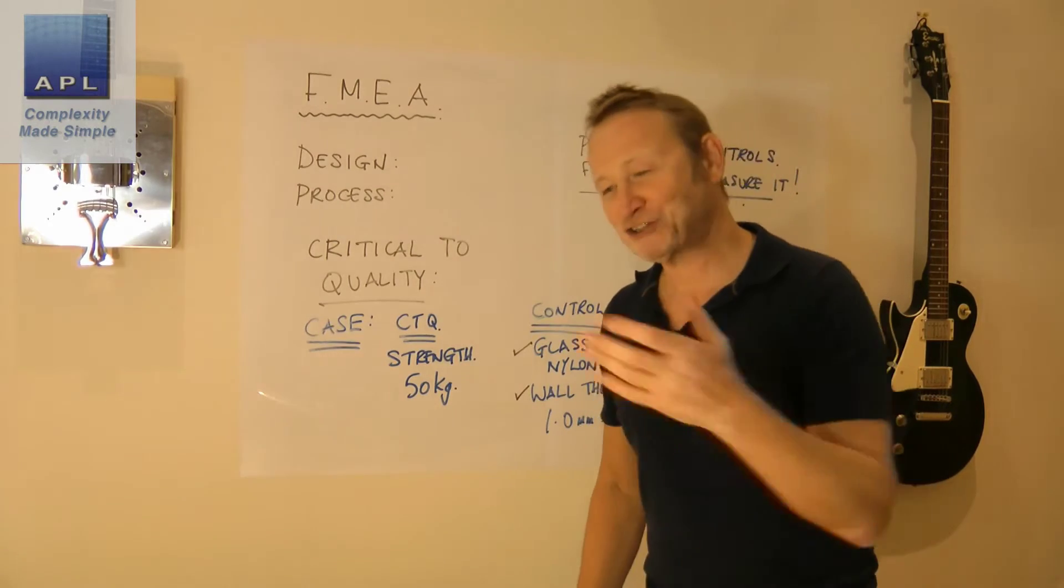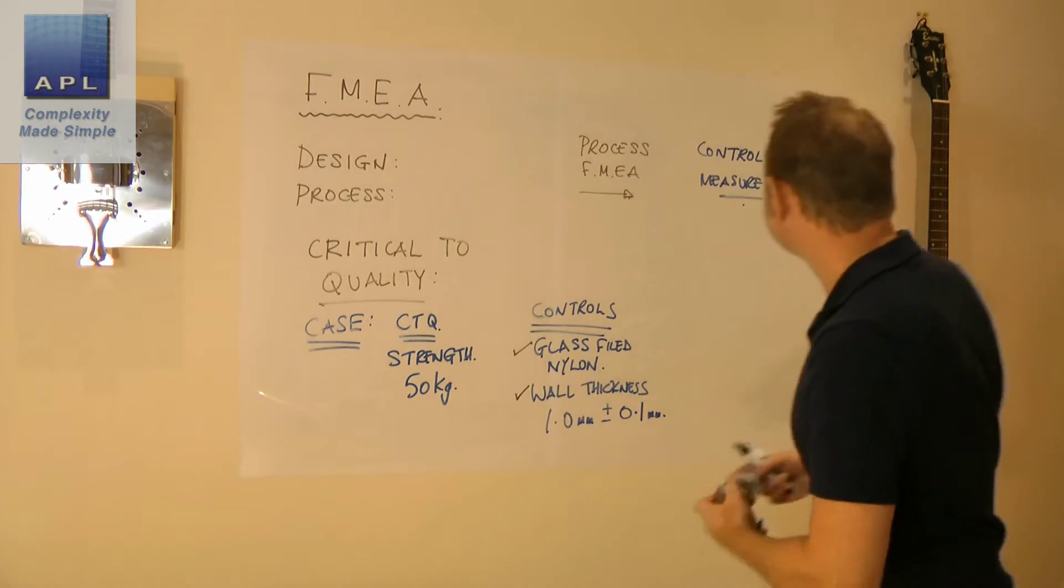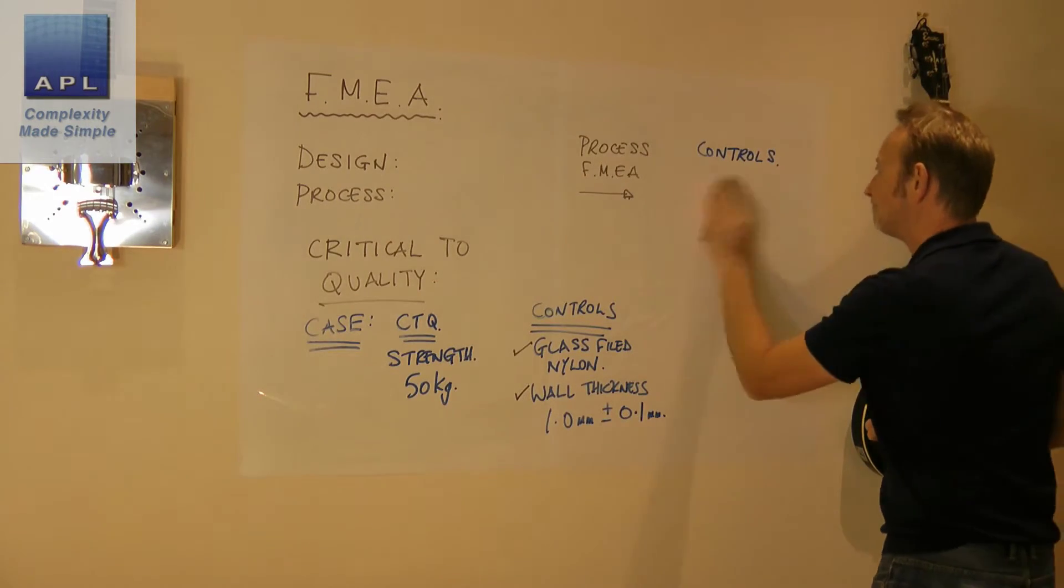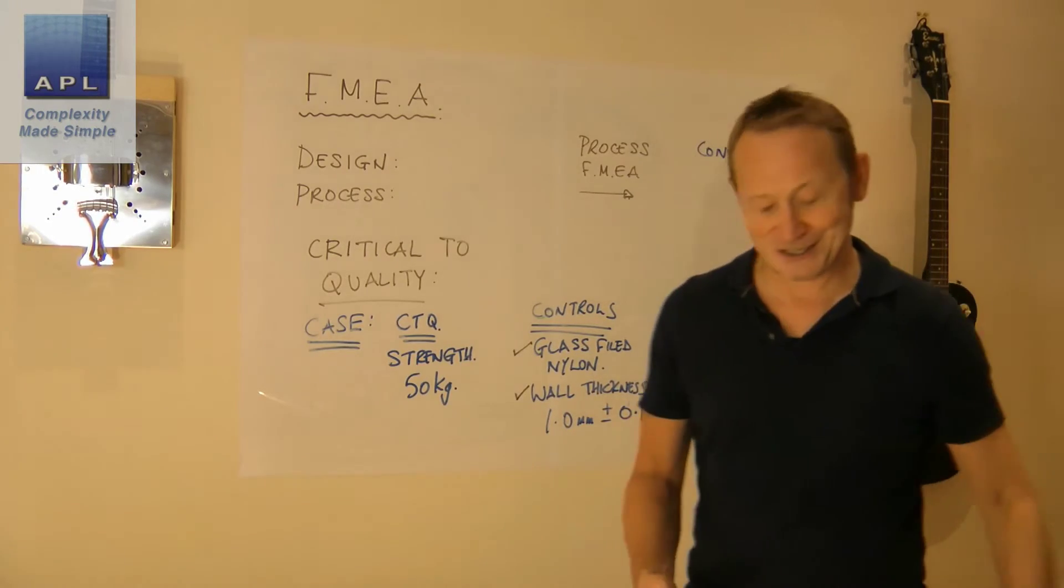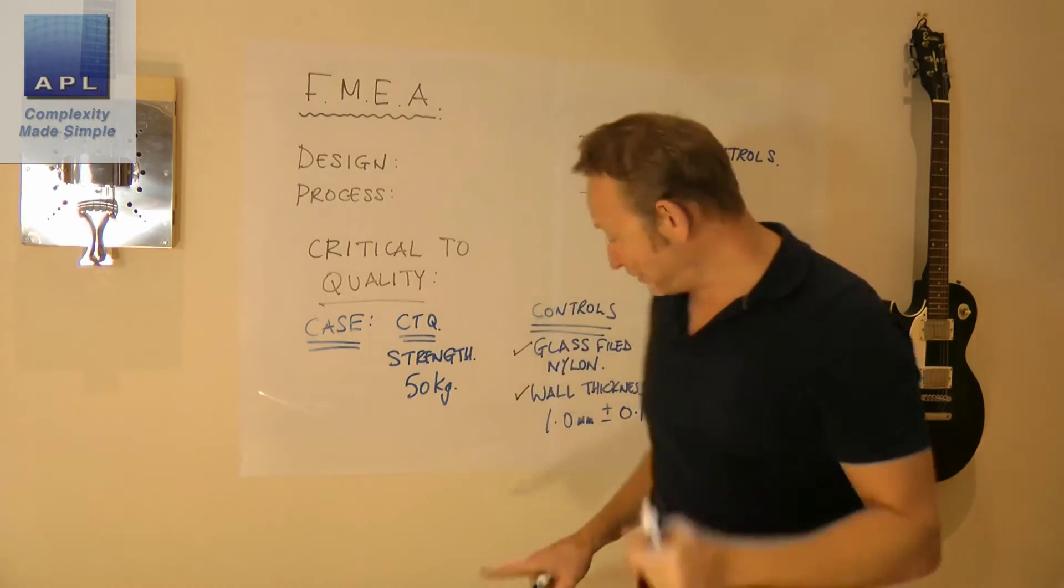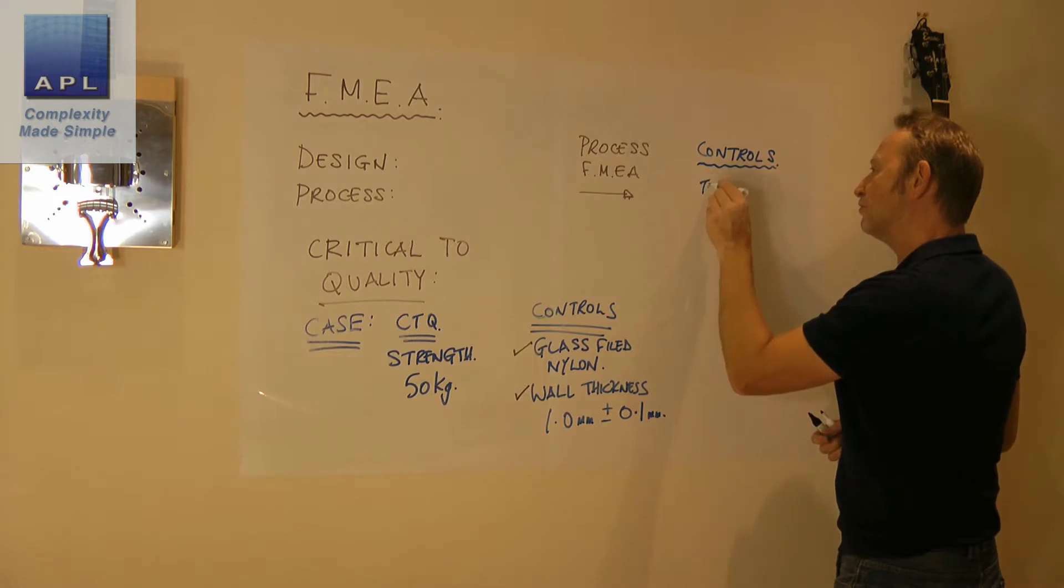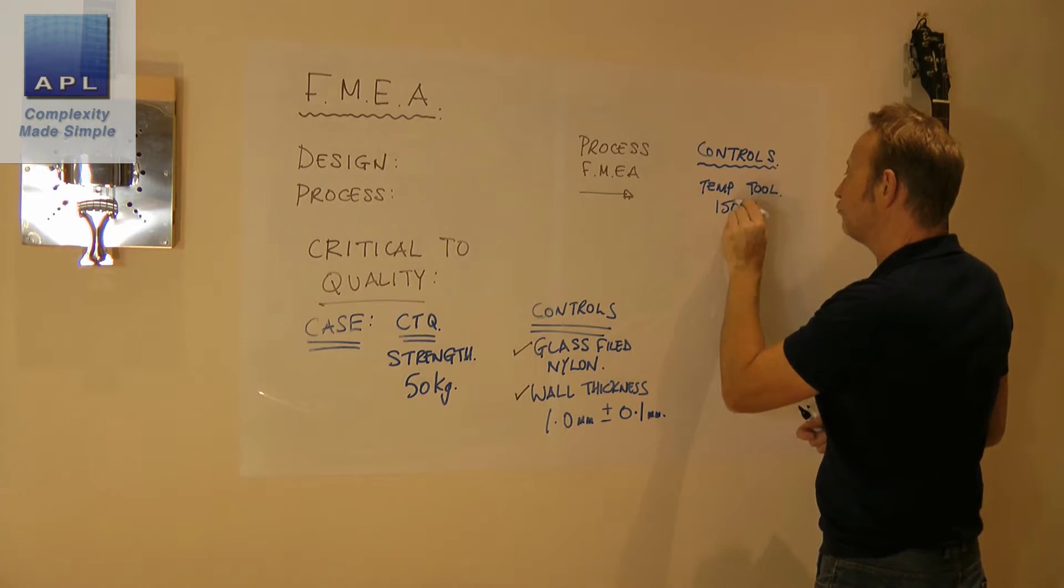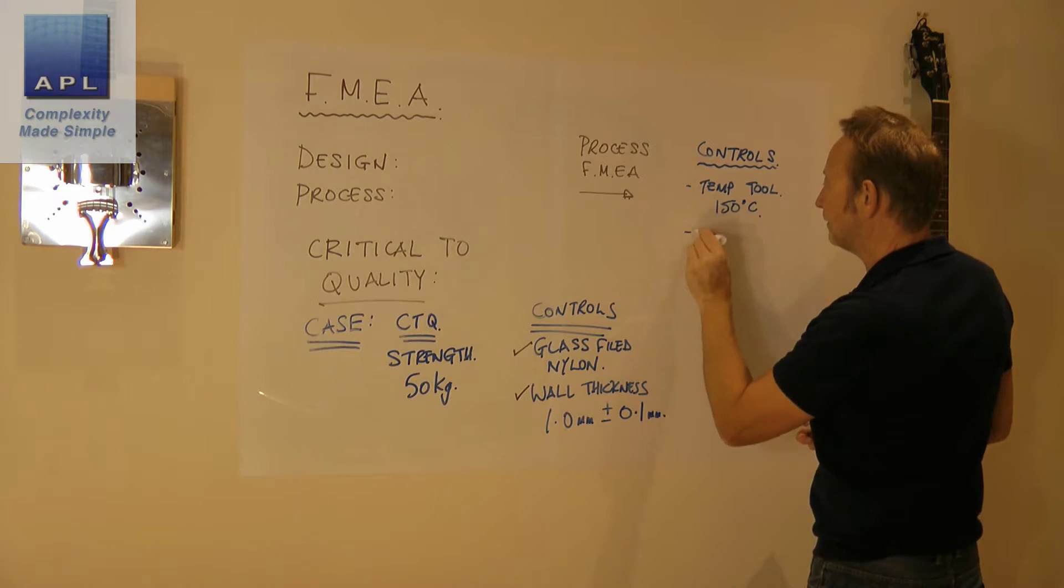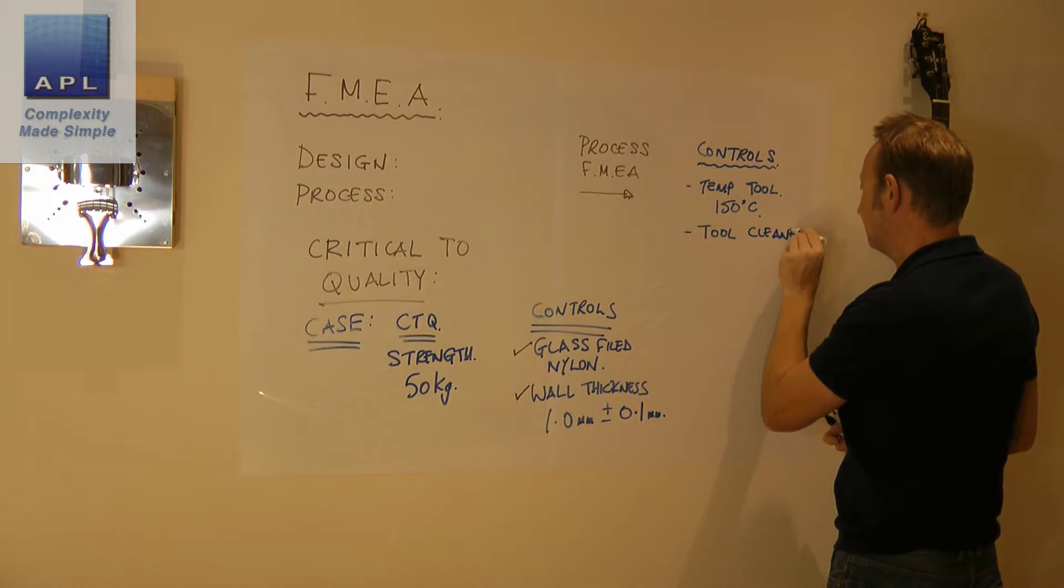No, no, process control. We're not going to measure it. We're going to figure out what settings exist on the molding machine that guarantee this. We're going to guarantee that this happens. Now we identify two controls. So we'll say temperature of the tool needs to be, I'm just going to make something up now, 150 degrees, and the tool must be cleaned weekly.